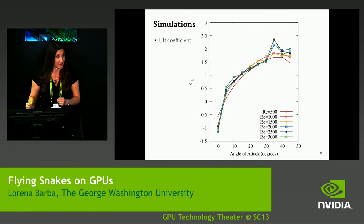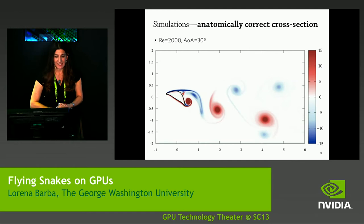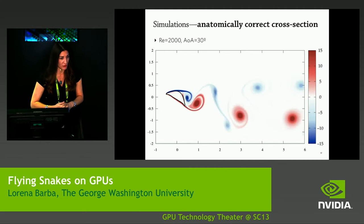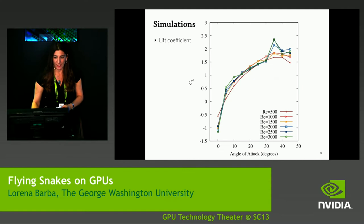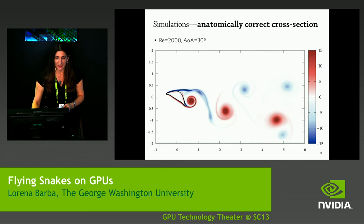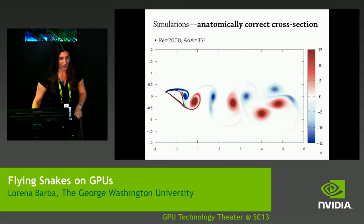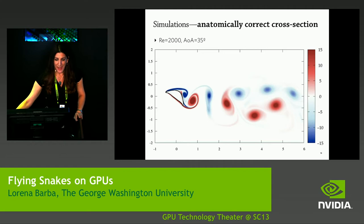In the experiments, the snakes are pretty small, so it would be quite hard to get the details of what's happening with the flow around them. But in the simulations, we can get very detailed images. This is an animation from simulations of the anatomically correct cross-section of a flying snake at an angle of attack of 30 degrees — a lower angle. At 35 degrees, the next animation, there's this extra peak, this extra boost in the lift coefficient. Look at the wake and see if you notice any difference. This is the wake signature of the high lift situation. The wake is more compact, with things about the frequency of shedding of those vortices that one can observe.